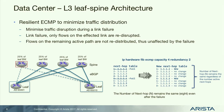With resilient ECMP, you keep your next hop count static. In this diagram, I have eight next hops and that value does not change. When a link fails, I only have to rehash the flows that were going over the failed link — those flows simply get rehashed over the remaining links, so disruption is minimized.